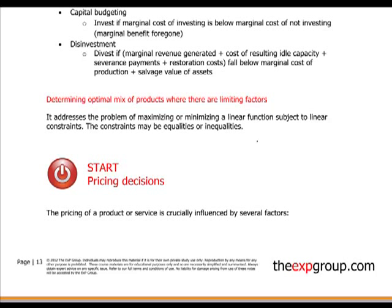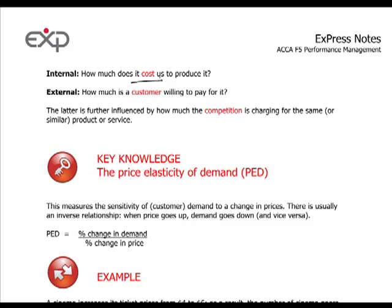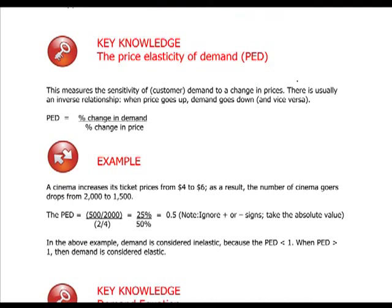Pricing decisions are another chapter of the syllabus and can be influenced by several factors. Internally, it depends on how much a product costs to produce; externally, it depends on how much a customer is willing to pay — that's the market. The price elasticity of demand is the change in demand divided by the change in price, and it can be higher or lower than one.